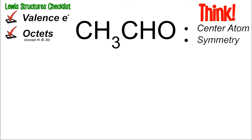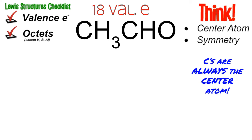Sometimes formulas look confusing, but they don't need to be. This formula is written due to functional groups you'll learn later. First, confirm the number of valence electrons: carbons are fours, hydrogens are ones, and oxygens are sixes, totaling 18 valence electrons. The formula's arrangement is a helpful hint — carbons are center atoms, so the three H's connect to the first carbon, and the H and O connect to the second carbon.